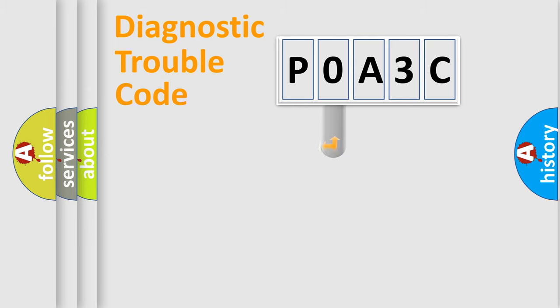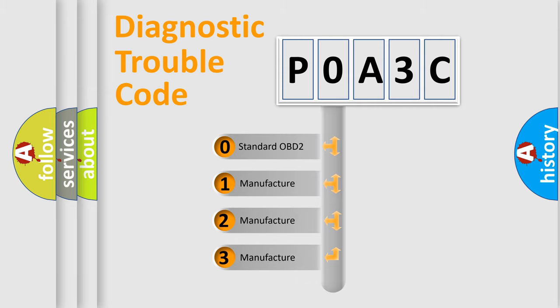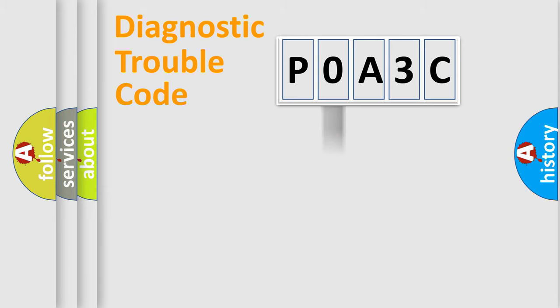This distribution is defined in the first character code. If the second character is expressed as zero, it is a standardized error. In the case of numbers 1, 2, or 3, it is a manufacturer-specific expression of the car-specific error.